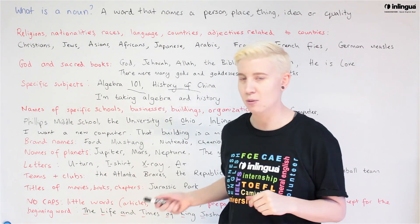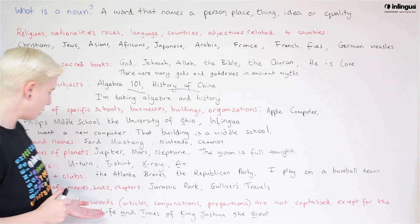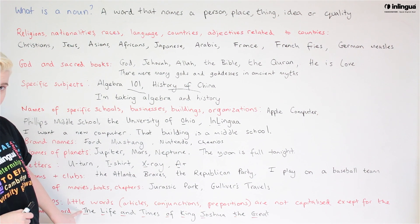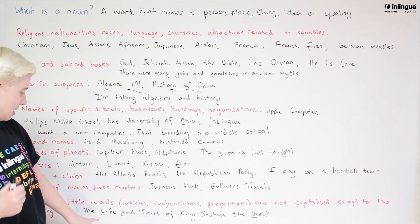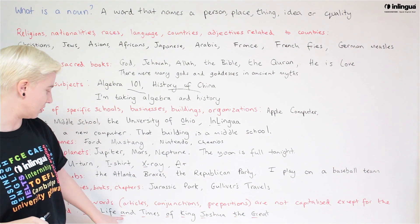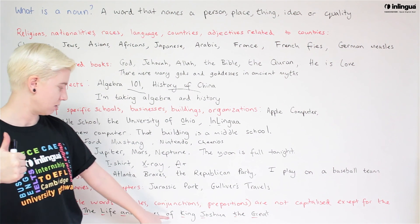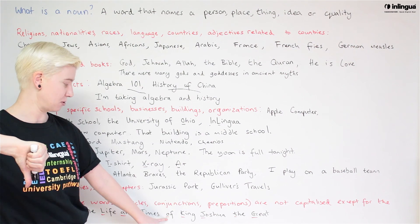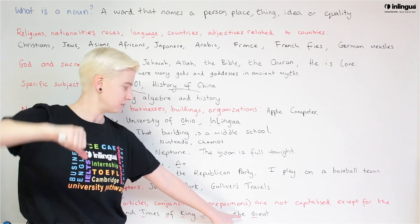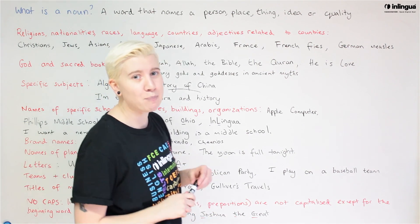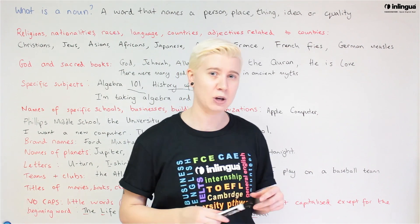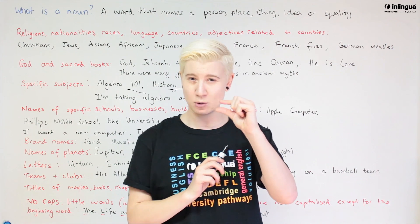Here's an example: 'The Life and Times of King Joshua the Great.' Capital T — it's the first word. Capital for Life. No capital for 'and' — we don't need a capital, it's linking. Times — capital. 'Of' — preposition, no capital. King — capital. Joshua — capital, it's his name. 'The' — no capital. Great — capital. That's really important to remember when putting together the names of books or movies in your work. Don't capitalize those little connection words.